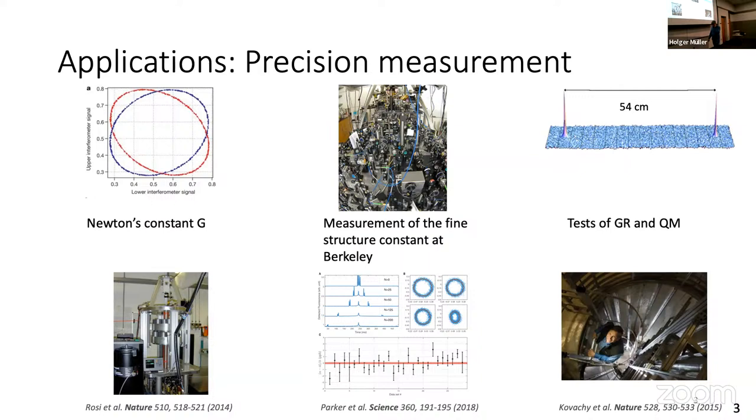Can we use it to measure the fine structure constant? How does that work? Now the kinetic energy of the atom comes into play. It also enters the Lagrangian and therefore enters the phase. We are now measuring the kinetic energy that the atom gets from being kicked by the photon. The photon momentum is h bar k, so that kinetic energy is h bar k squared over 2m. In other words, it is a measurement of the combination h over m, the ratio of the Planck constant to the mass of an atom.